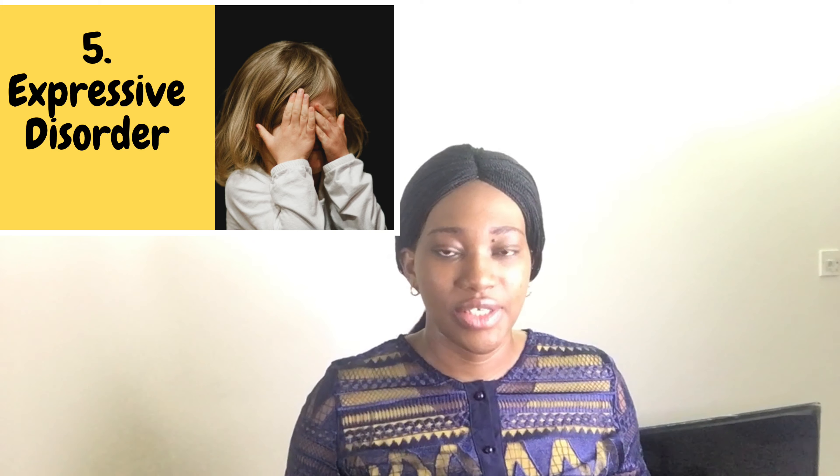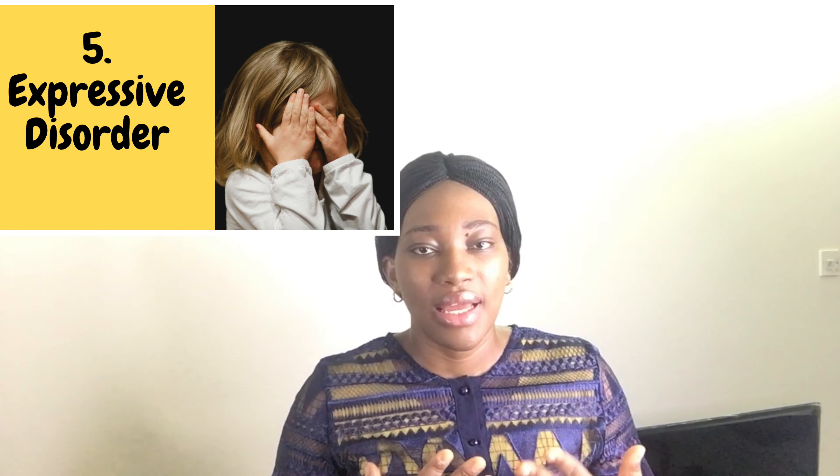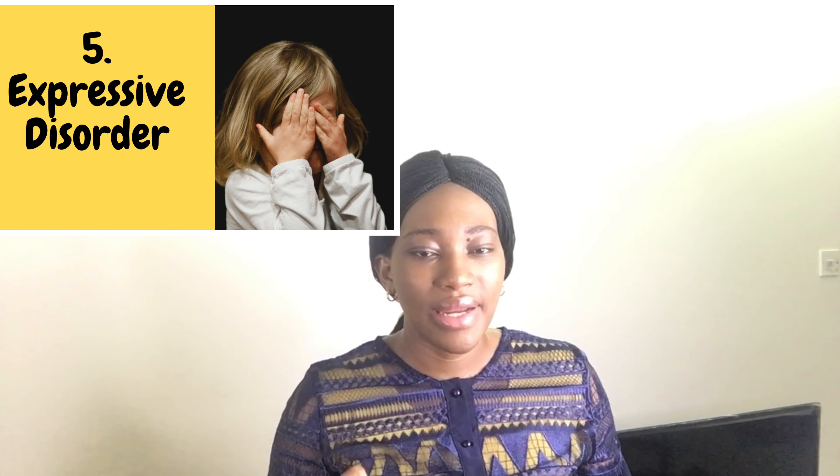Number five: Expressive disorders. This is when a child has trouble making accurate sentences to express information or feelings. It is associated with developmental impairments such as Down syndrome, autism, and hearing loss.